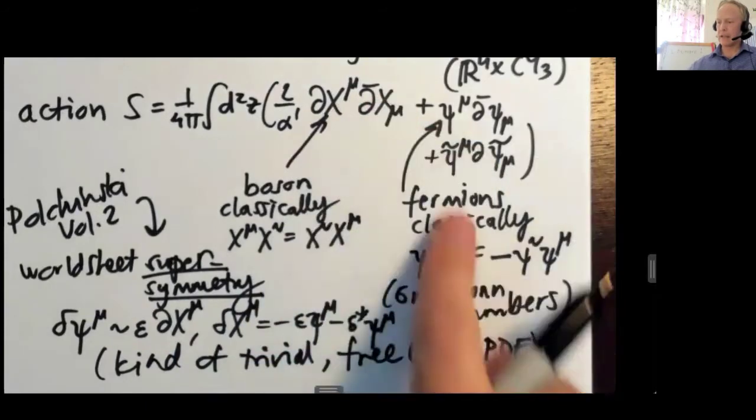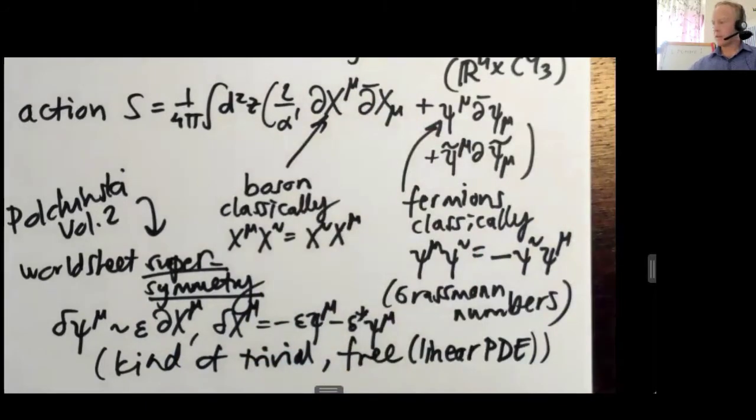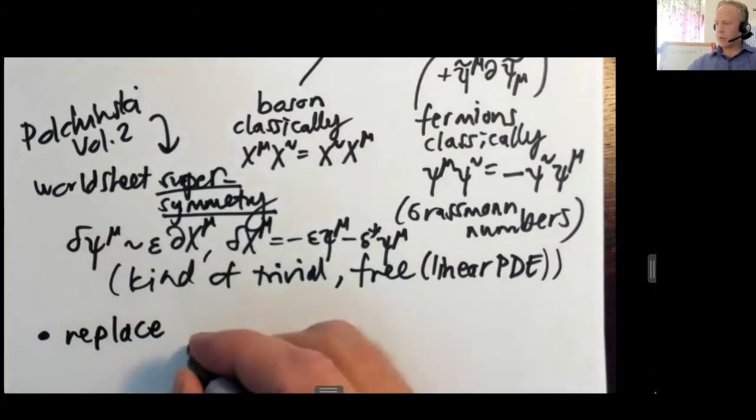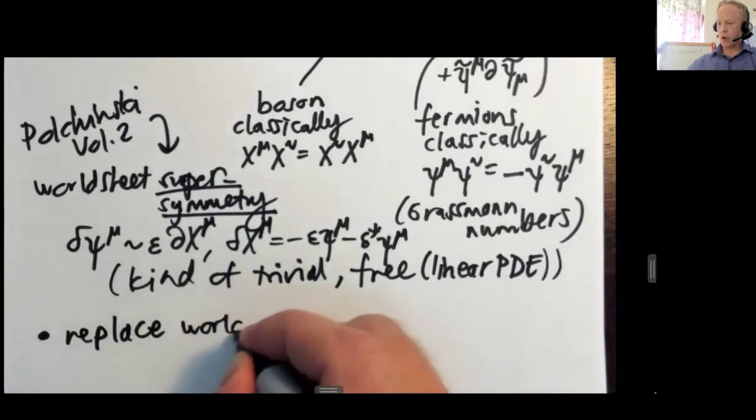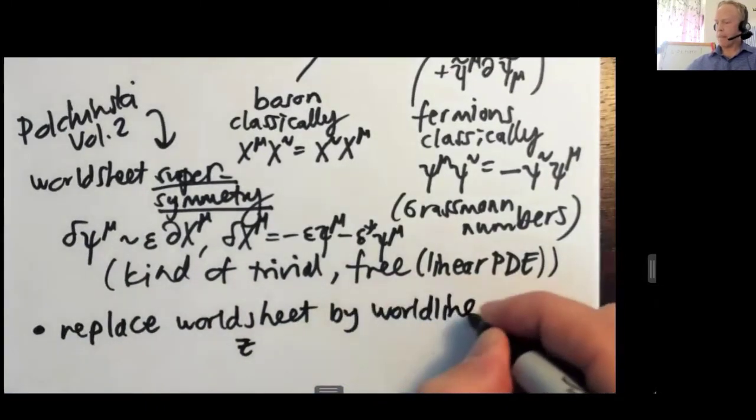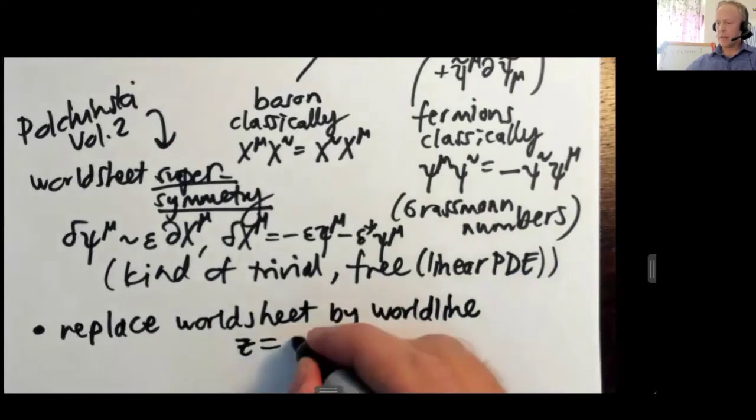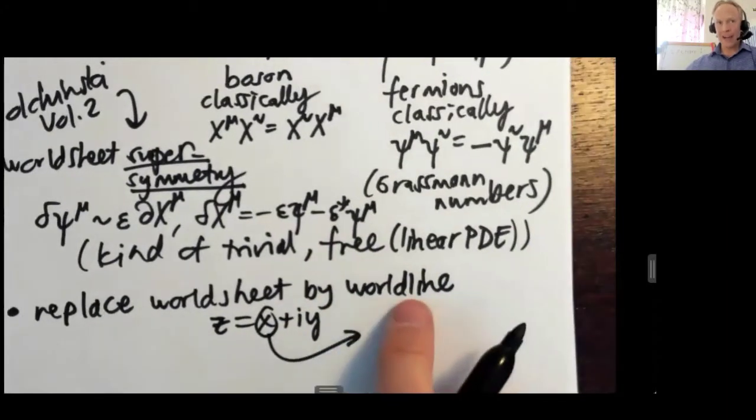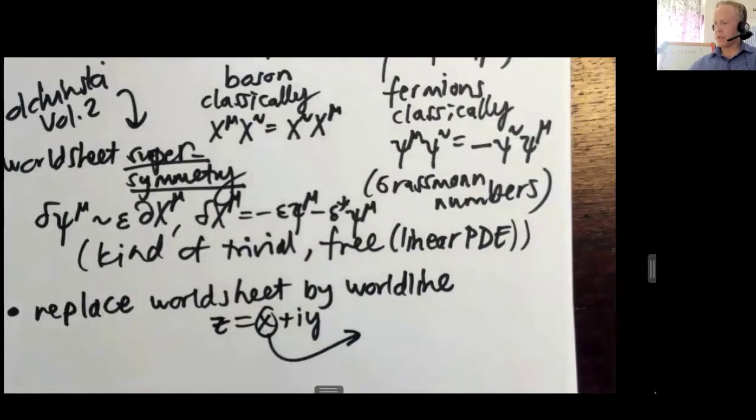Now you might immediately say, well, supersymmetry, does it exist in the real world? Let me argue, in this sense, yes. So replace the world sheet, which is my complex variable z, by a world line. By that, I just mean pick, is conventional, usually the imaginary part, but for the sake of argument, let me pick the real part. Regular quantum field theory arises from string theory as a small sort of subset. This is at least how I think of integration.